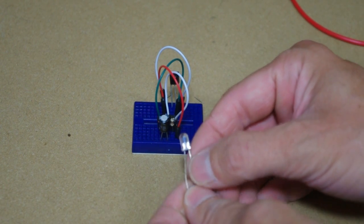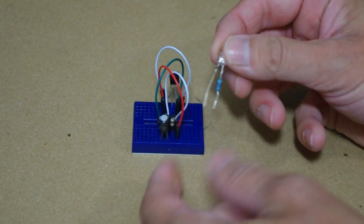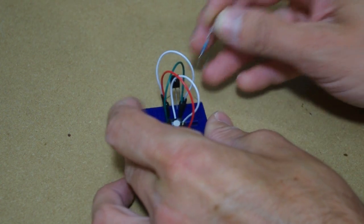This is another thing that I suggest everyone have a ton of on hand, just a little resistor that's soldered onto an LED. It comes in handy for testing out things like this.